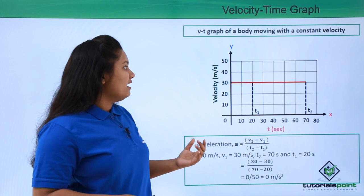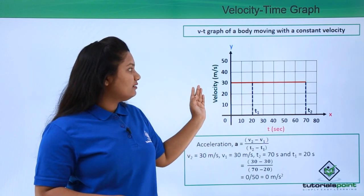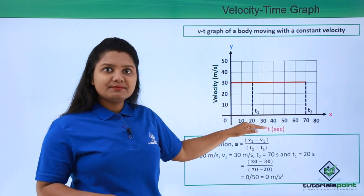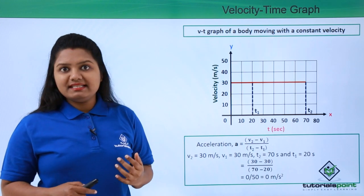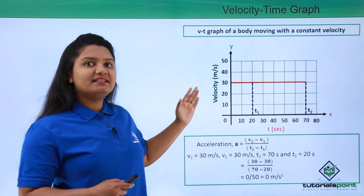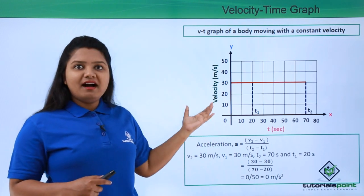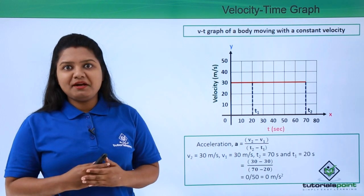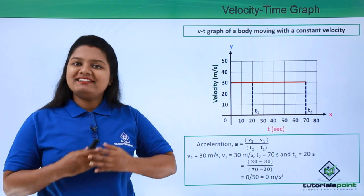This verifies what we have already learned: a velocity time graph parallel to the x-axis represents a body moving with uniform velocity and its acceleration is zero, which is clearly verified here. So this is how we can find acceleration from the velocity time graph. I hope this video was helpful to you. Thanks for watching.